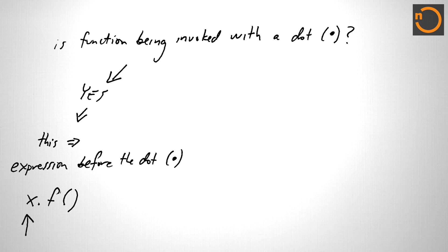If the answer to this question is no, it's the very same function object being invoked without a dot. In that case, this will evaluate to the global object. And in the browser, the global object is called window.